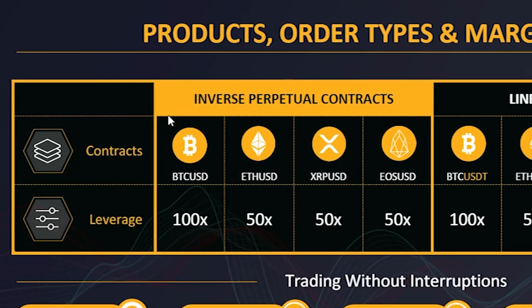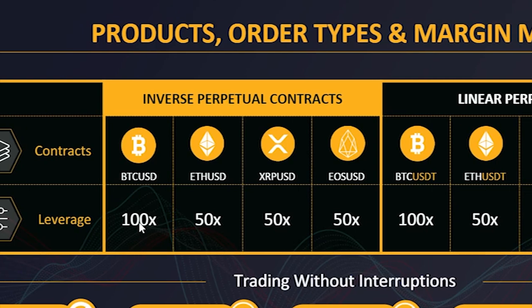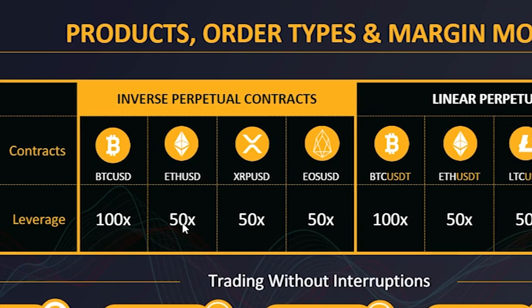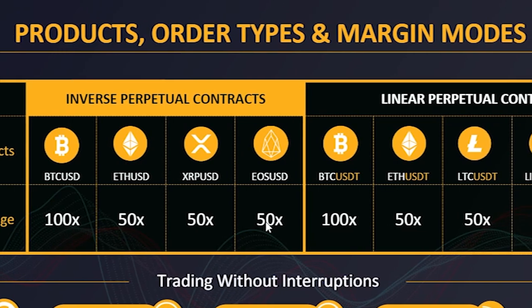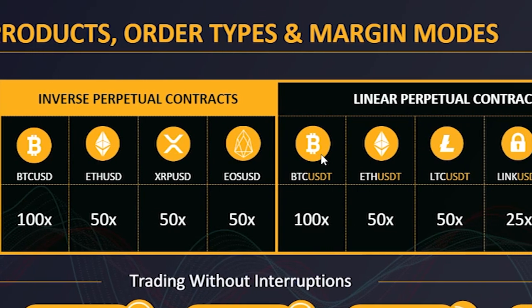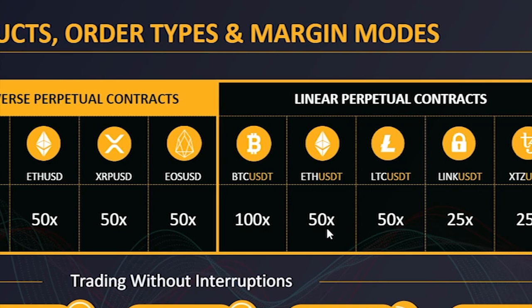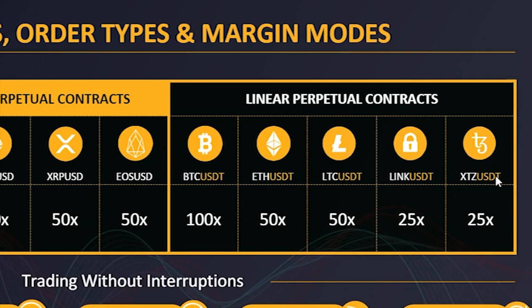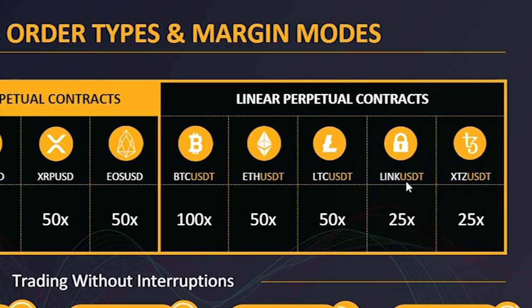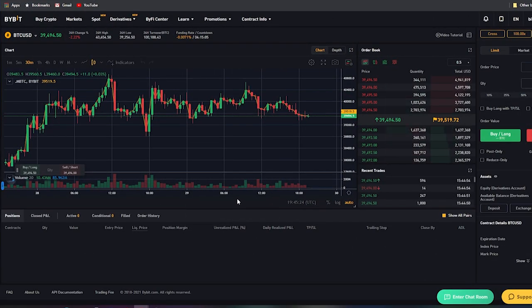The main two that I personally use are inverse perpetual and USDT perpetual. If you're in inverse and your funds are in Bitcoin or any of those assets, your funds' value will go up and down with Bitcoin's value regardless of whether you're in a trade. If you're in USDT, your funds when not in a trade stay in USDT and don't move with the coins. In inverse perpetuals, Bitcoin supports up to 100x leverage, Ethereum up to 50x, XRP up to 50x, and EOS up to 50x. In USDT perpetual, Bitcoin is up to 100x, Ethereum 50x, LTC 50x, with most other coins likely capped around 25x.